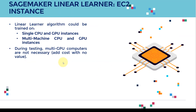The Linear Learner algorithm can be trained on single CPU and GPU instances. In our case, the data is very simple, so a single CPU will be more than enough. You can also train on multi-machine CPU and GPU setups, but AWS recommends not using multi-GPU for testing — you'll just pay more without getting much value, since the algorithm is very simple.